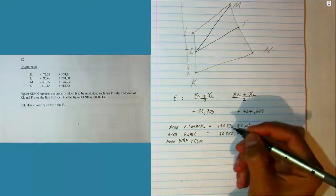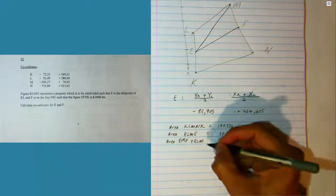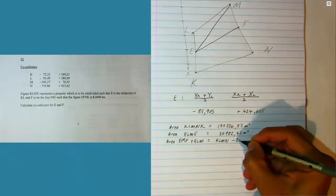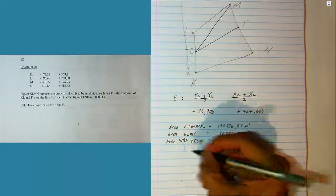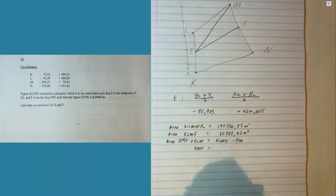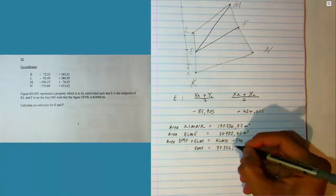Area EMF plus ELM is equal to area KLMN, that's the total area, minus 8 hectares. So EMF can be calculated.